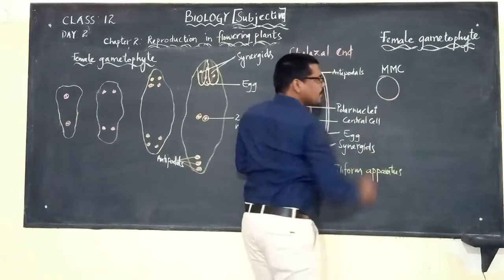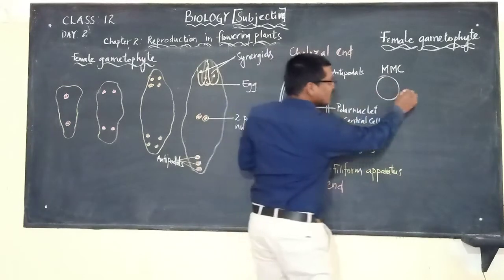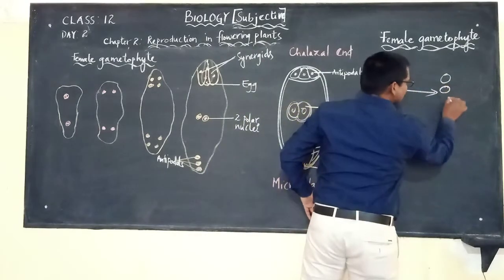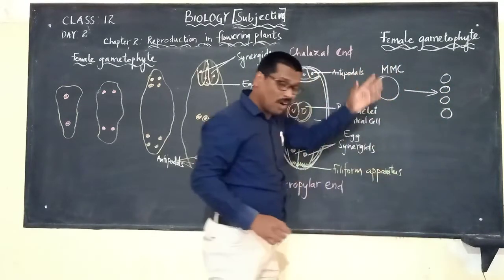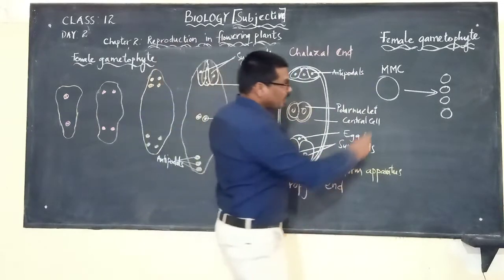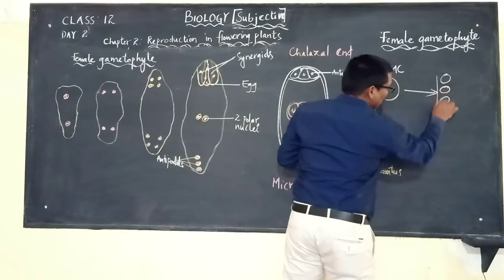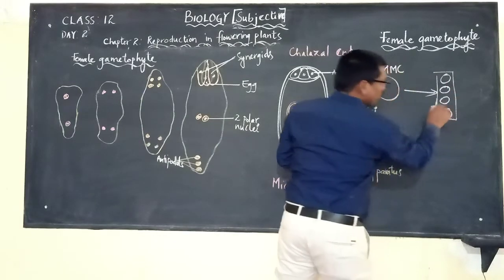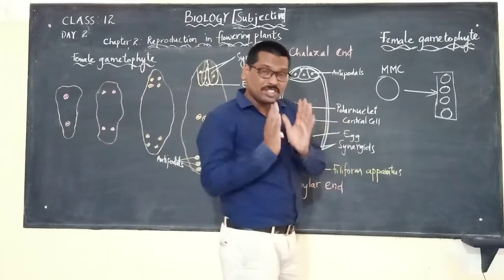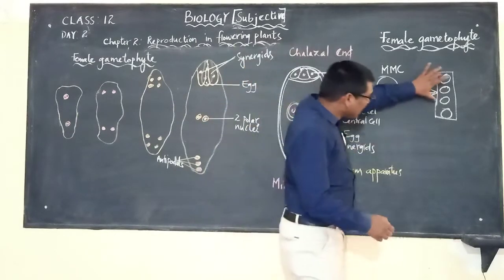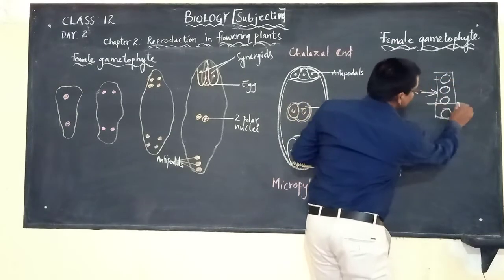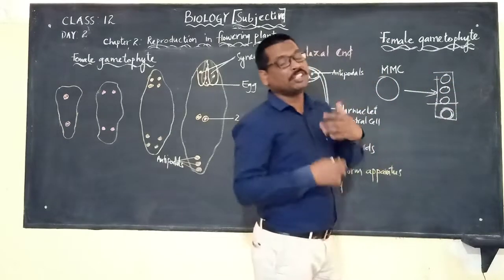When the megaspore mother cell undergoes meiotic division, it forms four cells — all called megaspores. From these four megaspores, in the majority of flowering plants, three will be degenerating and only one will be maturing into a female gametophyte.